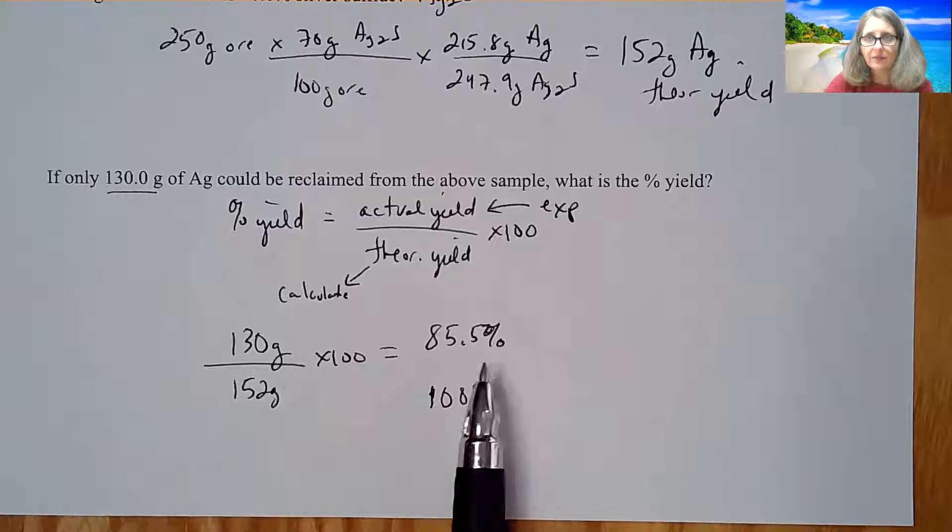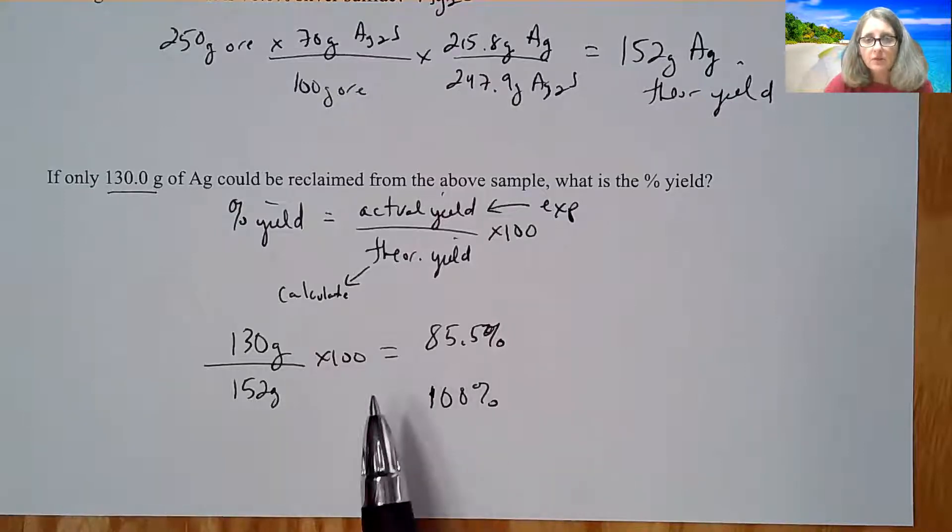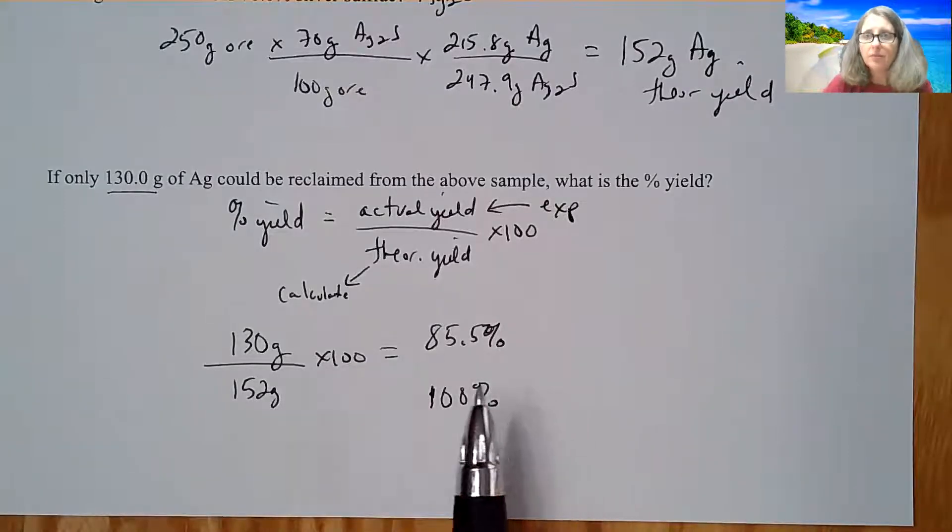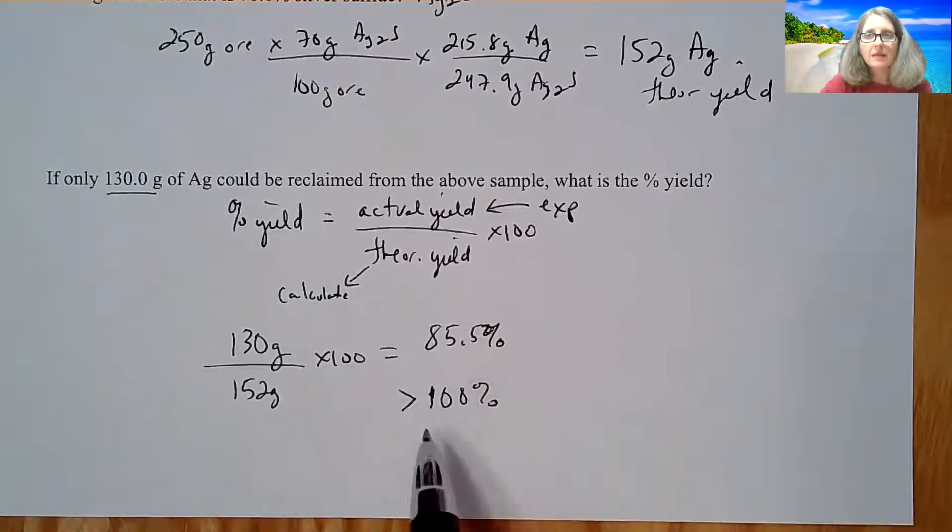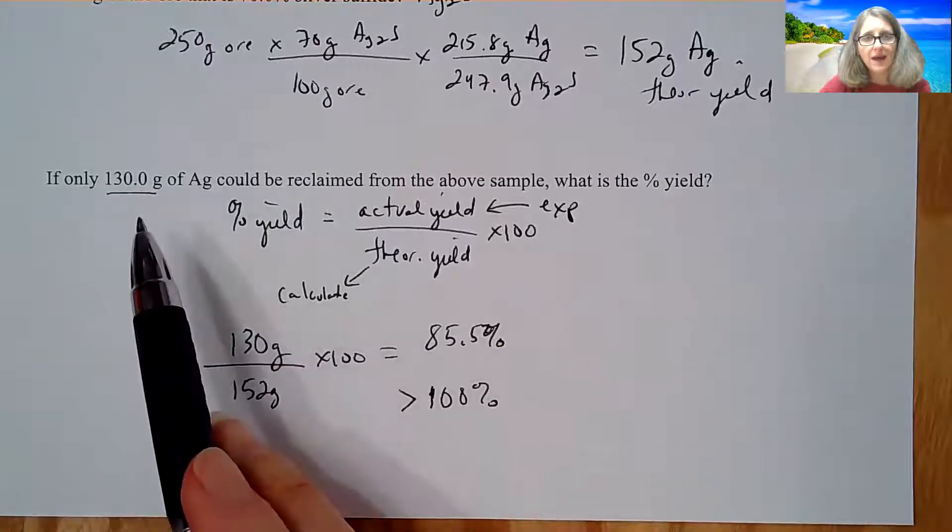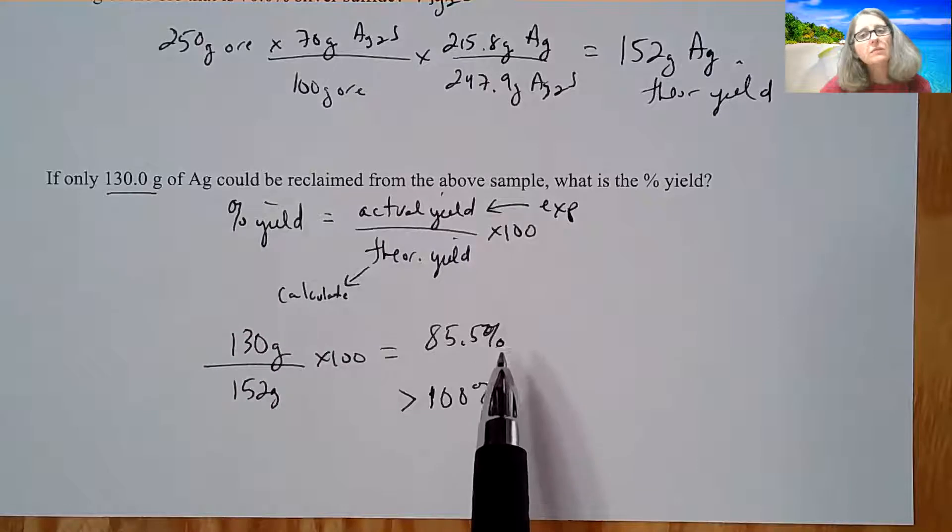So you're going to take the actual over the theoretical and multiply it by 100 to get about 85.5% here. Three digits seems fine for percentages. Your goal is to get to 100%.